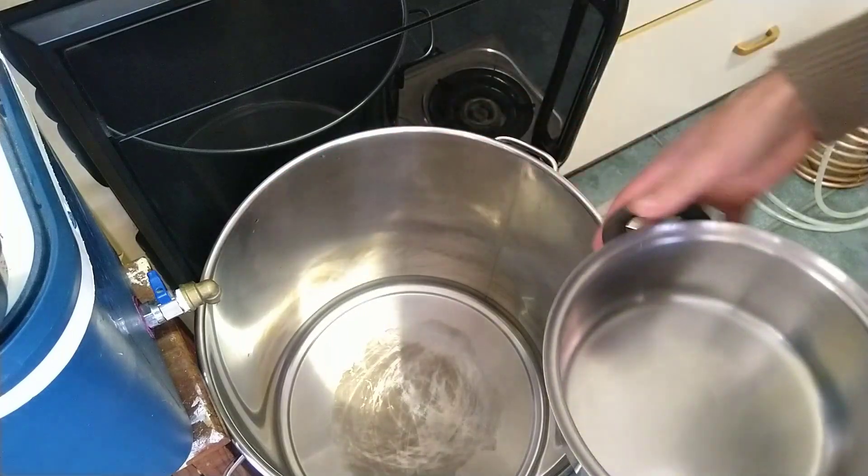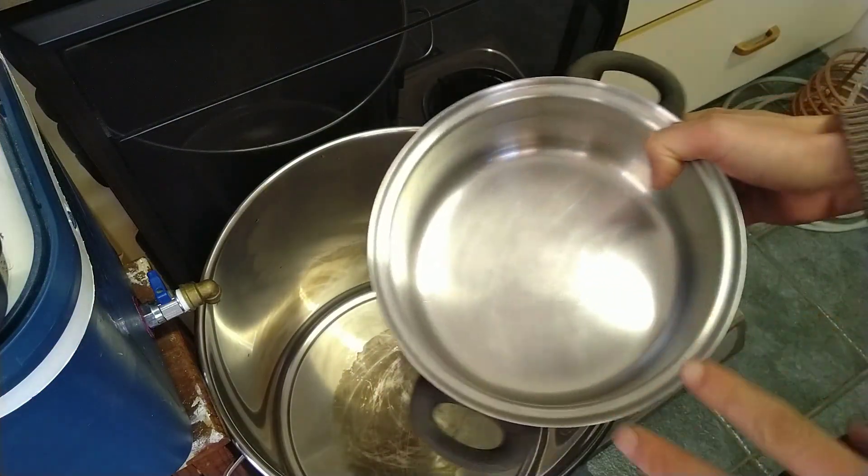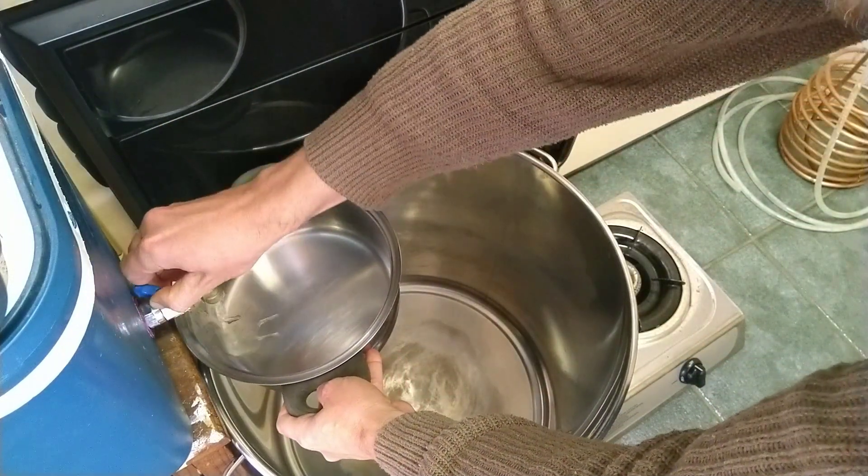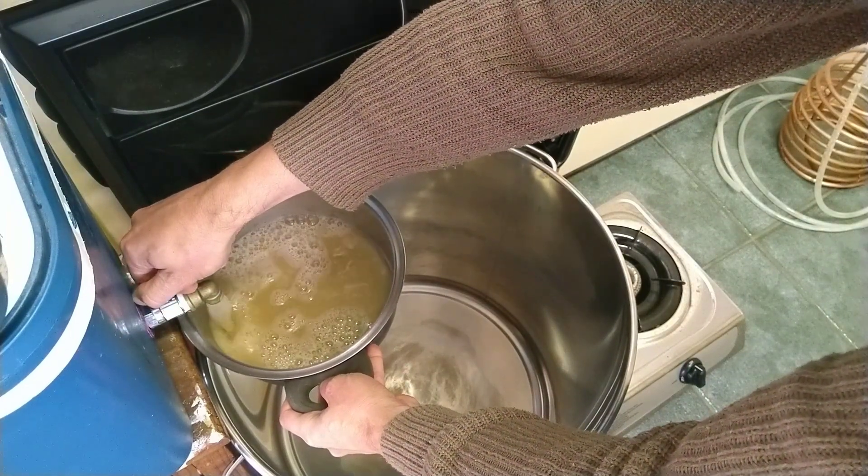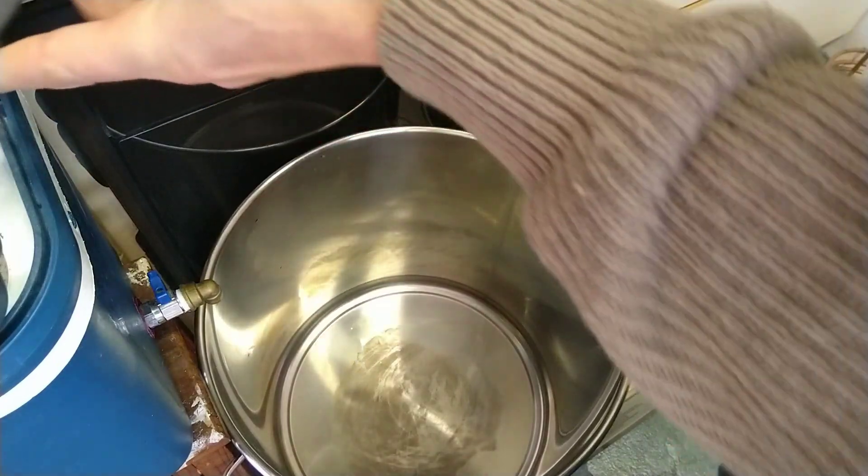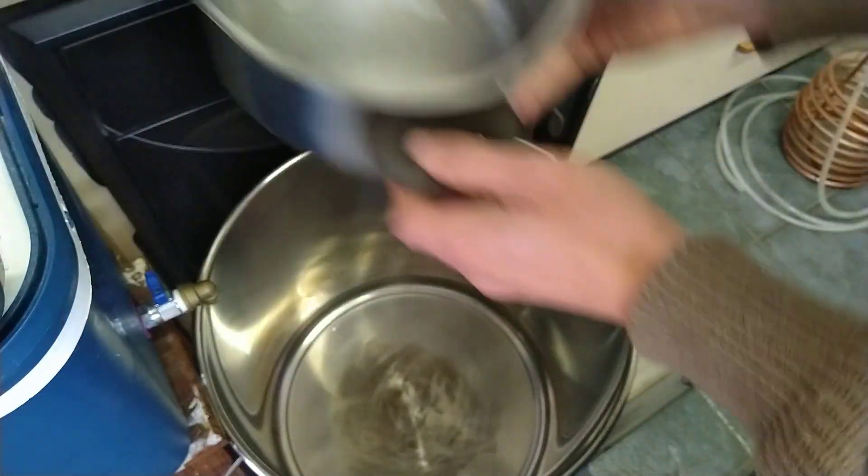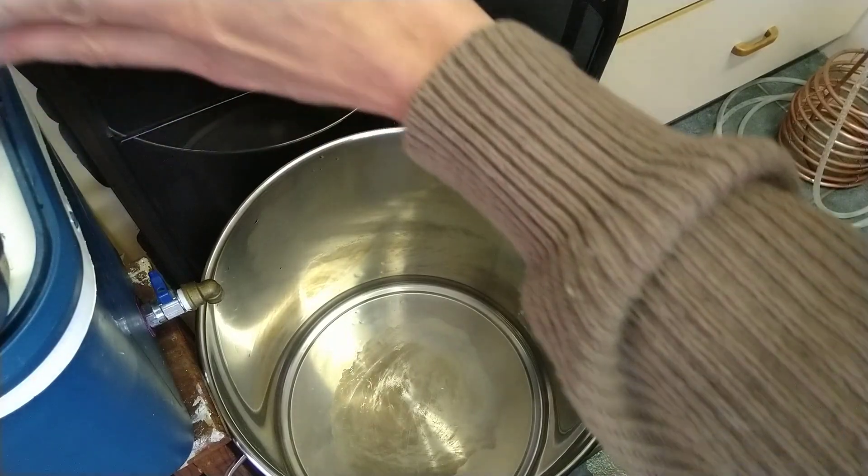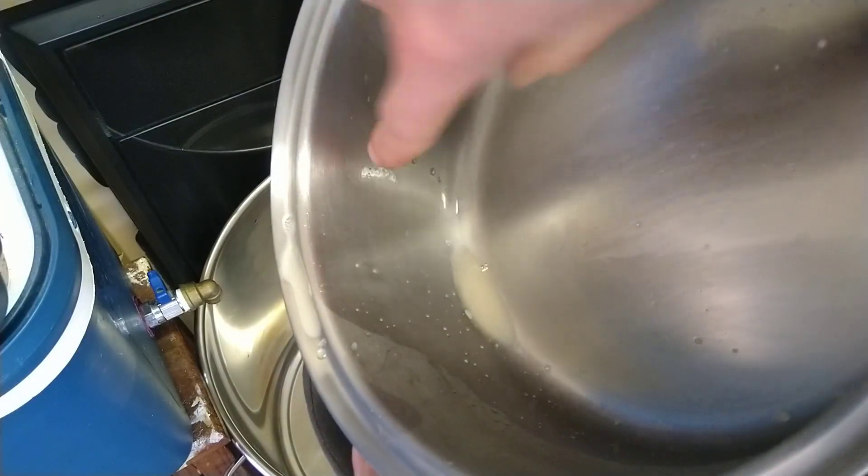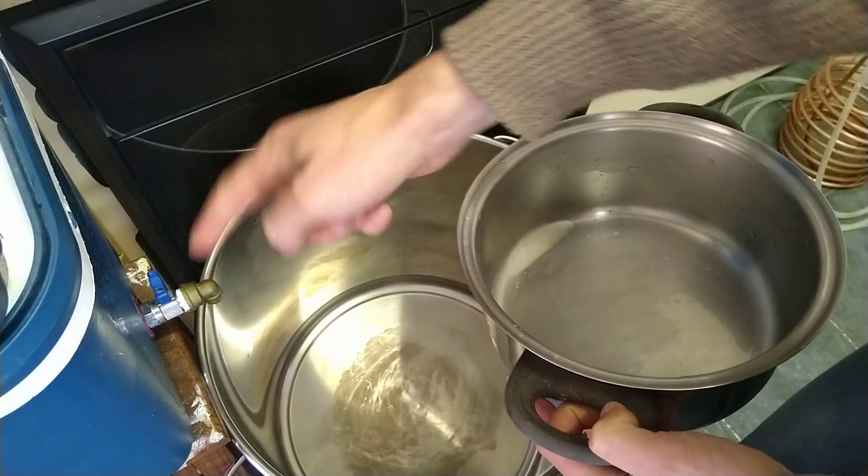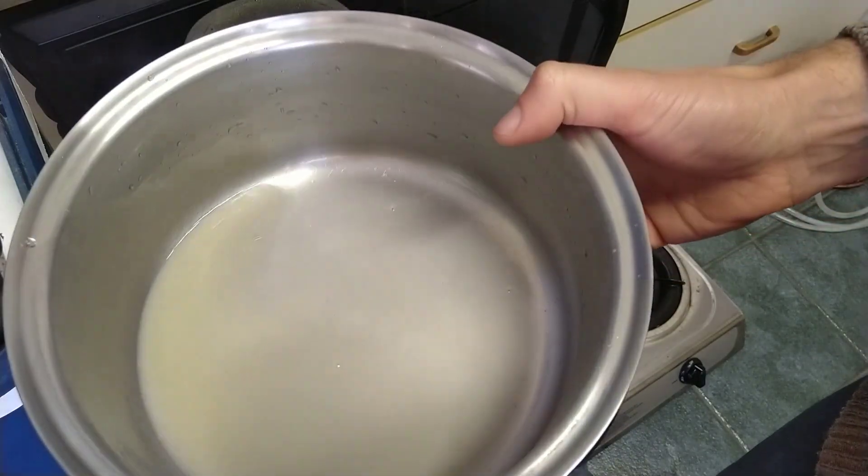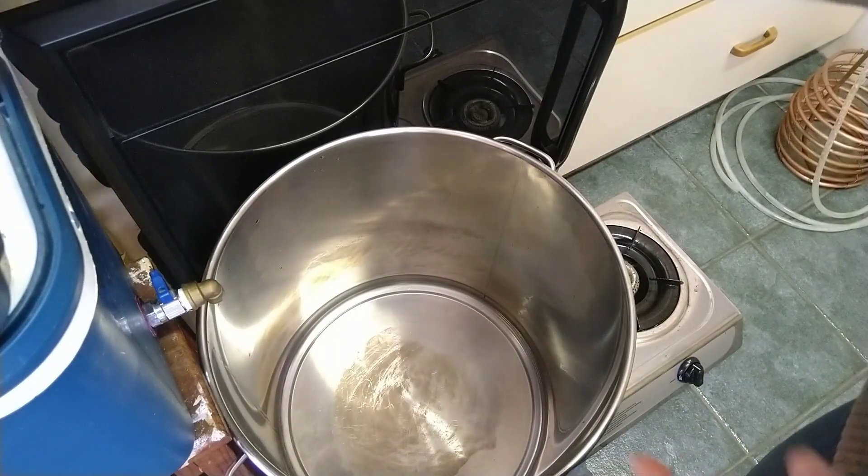At first you'll get some bits of grain coming through, so use a small pot to catch the first few liters and tip it back in until it starts running clearer. This is a weiss beer with wheat, so we're not really going to get very clear, but I want to take out these big chunks. The grain bed at the bottom is acting as a filter.